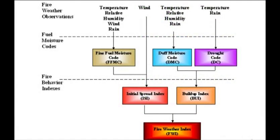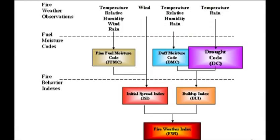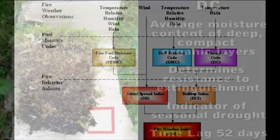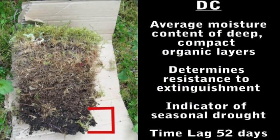The Drought Code, or DC, represents the deep duff layer that determines resistance to extinguishment. It indicates seasonal drought. The DC is sensitive to rain and temperature with a time lag of 52 days.